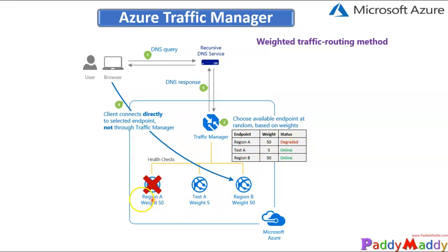If one region is degraded, you can route more weight — say 50 — to region B, and if that also degrades, traffic can go to test A. These weights are very useful in scenarios like gradual application upgrades or allocating performance traffic to route to a new endpoint.